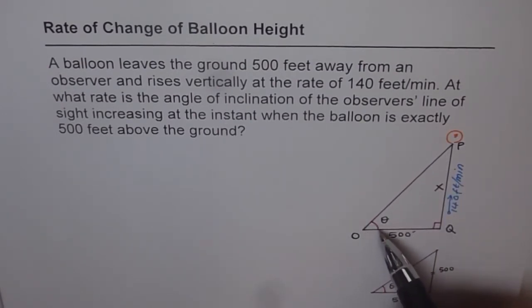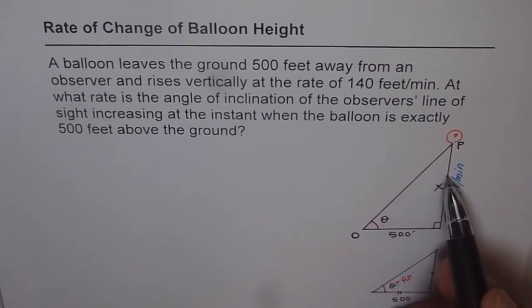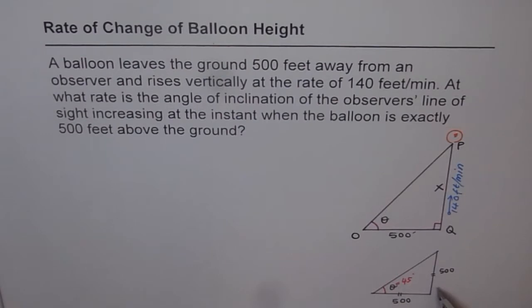This is what we have to find when the height is 500 feet. Now since we have to find this angle at height of 500 feet, we have another diagram here where we have shown that particular instance of time at which we are interested. So 500 feet is the space between the observer and the point where the balloon was released. And that is the instance of time when the balloon was 500 feet above the ground.